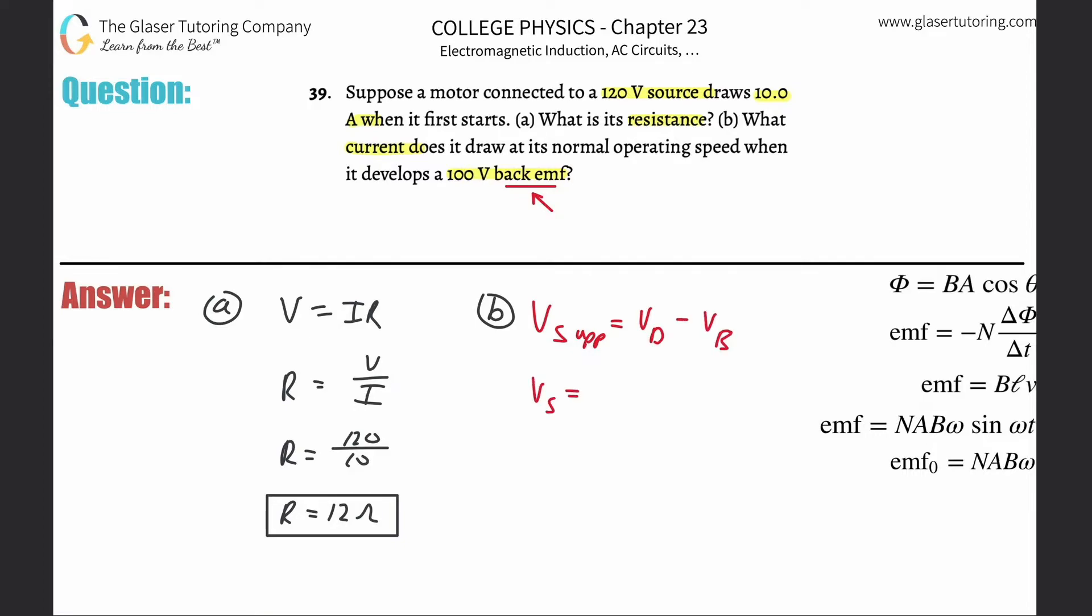So in other words, the voltage supplied now is actually going to be 120 minus then 100. So it's just 20 volts now. Okay.